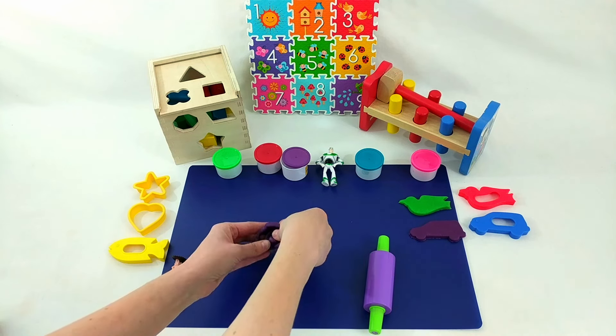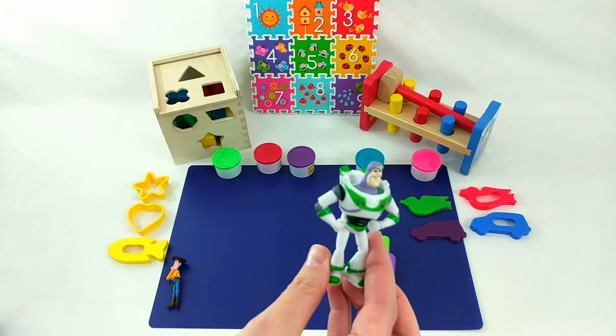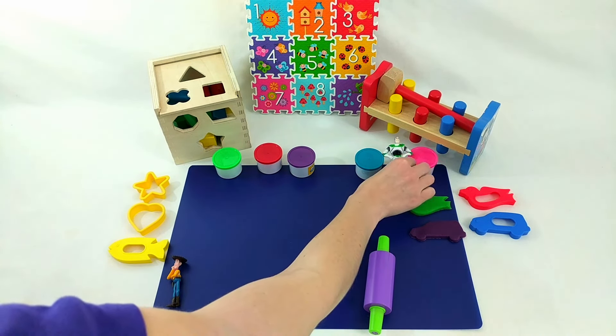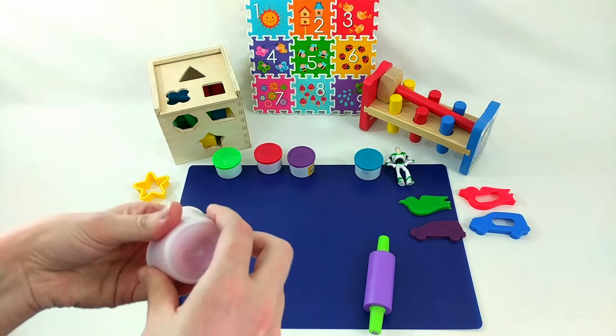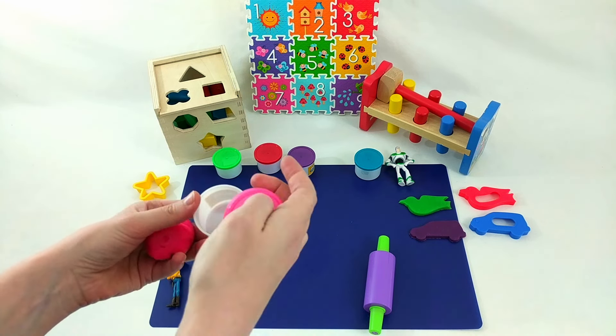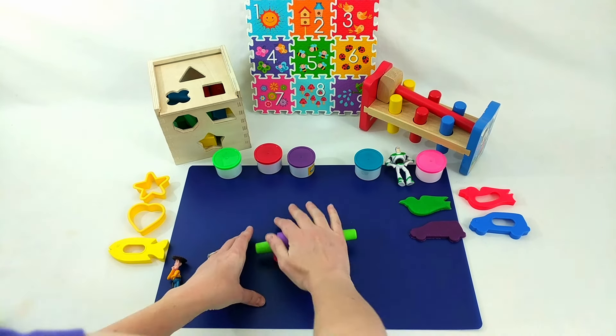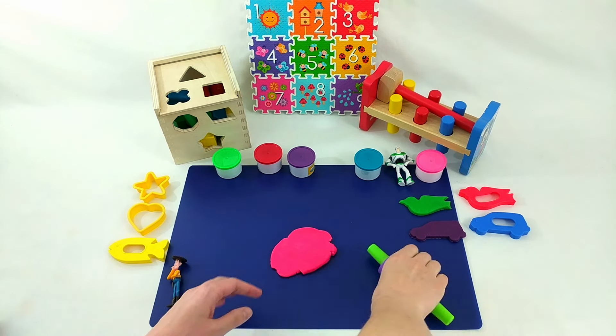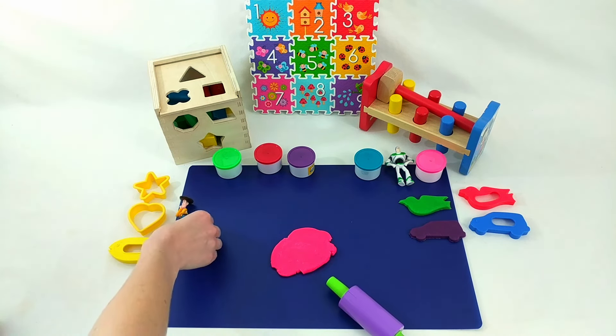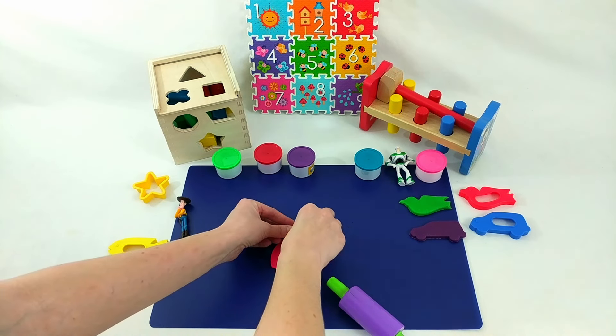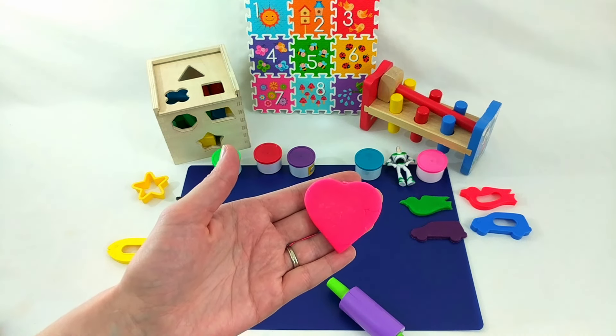Let's clean up the extra and put it away. Okay, Buzz. Which color is next? Pink. Alright, let's use pink. What shape should we cut out with the pink Play-Doh? Woody chose a heart. Here we go. It's a pink heart.